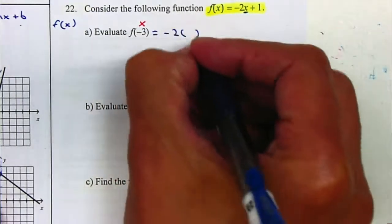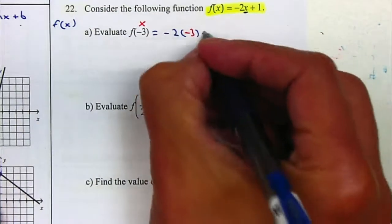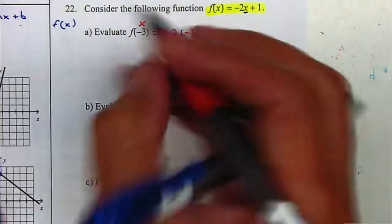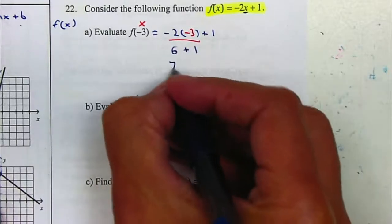Negative 2 instead of the x, we're going to plug in a negative 3, that's what they ask us to do. Plus 1, and we're going to simplify, that will give me a 6 plus 1, which is 7.